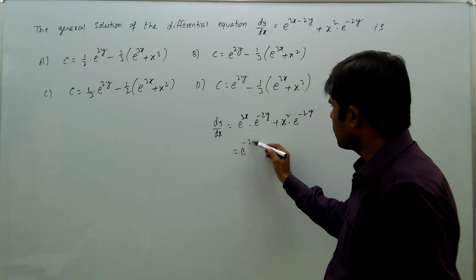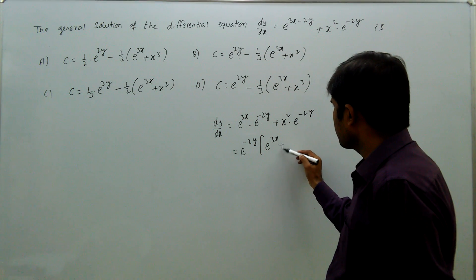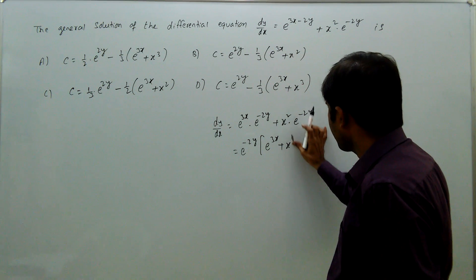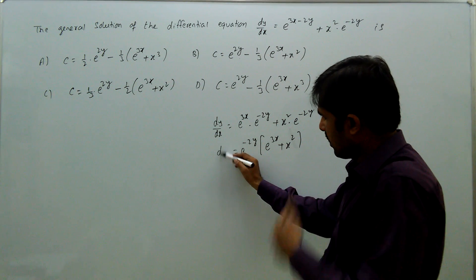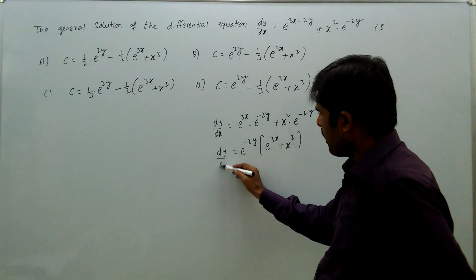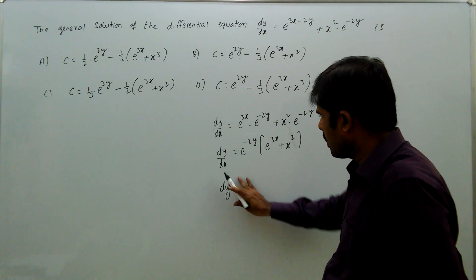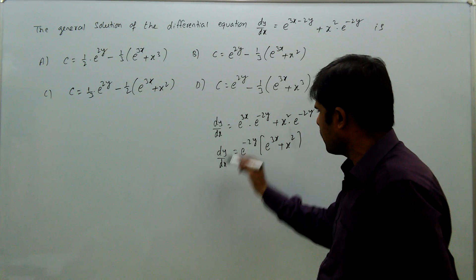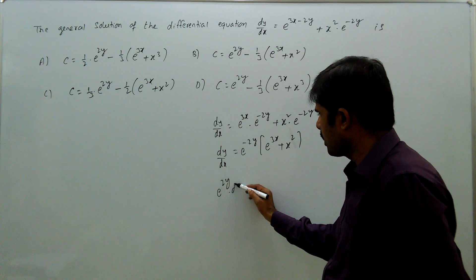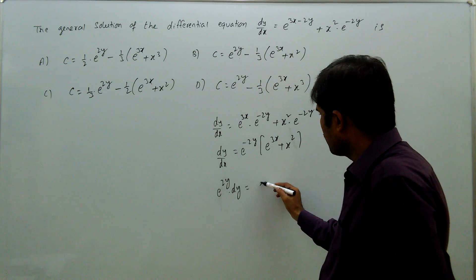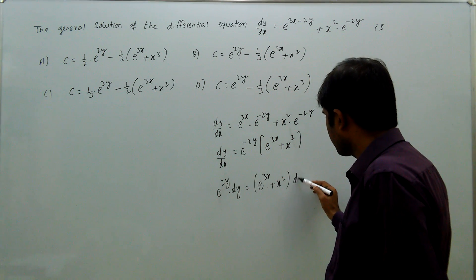Taking out the common factor e^(-2y), we get (e^(3x) + x²)·e^(-2y) = dy/dx. Rearranging, e^(2y) dy = (e^(3x) + x²) dx.